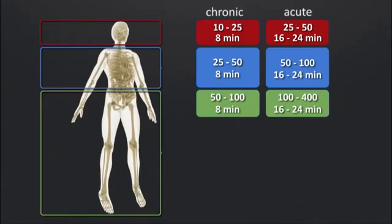For a chronic condition in the thoracic abdominal area, you can already increase the intensity, starting from 25 to 50, also for 8 minutes. And for everything below the hip with the pillow or the probe, you should set the IMRS on intensity 50 to 100 with 8 minutes. The only thing you have to know is whether you have had this issue for a longer time, or if it's something brand new — which we will now look at as an acute problem.